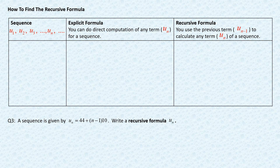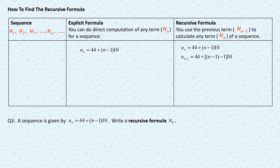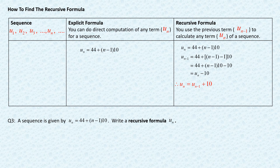In question number three, you are not given a sequence — instead the question gives you an explicit formula and you want to write out the recursive formula for u(n). To do this, you find the previous term u(n-1) by substituting n with n minus 1 into the explicit formula. From that relation you can write out u(n) in terms of the previous term u(n-1). This is your recursive formula, and remember to include the condition for n and the value of the first term.